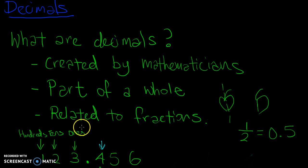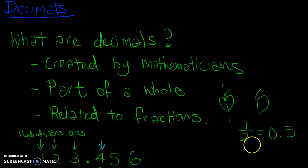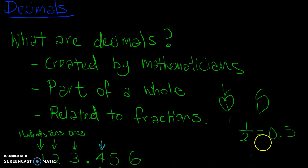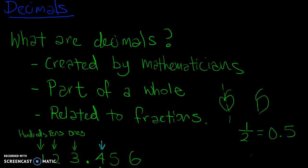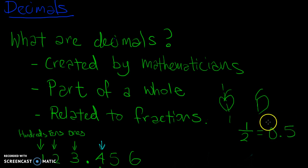Decimals are actually very similar to fractions, and I'm going to show you gradually how one half is actually related to 0.5. But for now, understand that it's another way to represent a part of a whole, just like fractions. Whenever you have a decimal, it is not a whole number — it's actually only part of a whole.